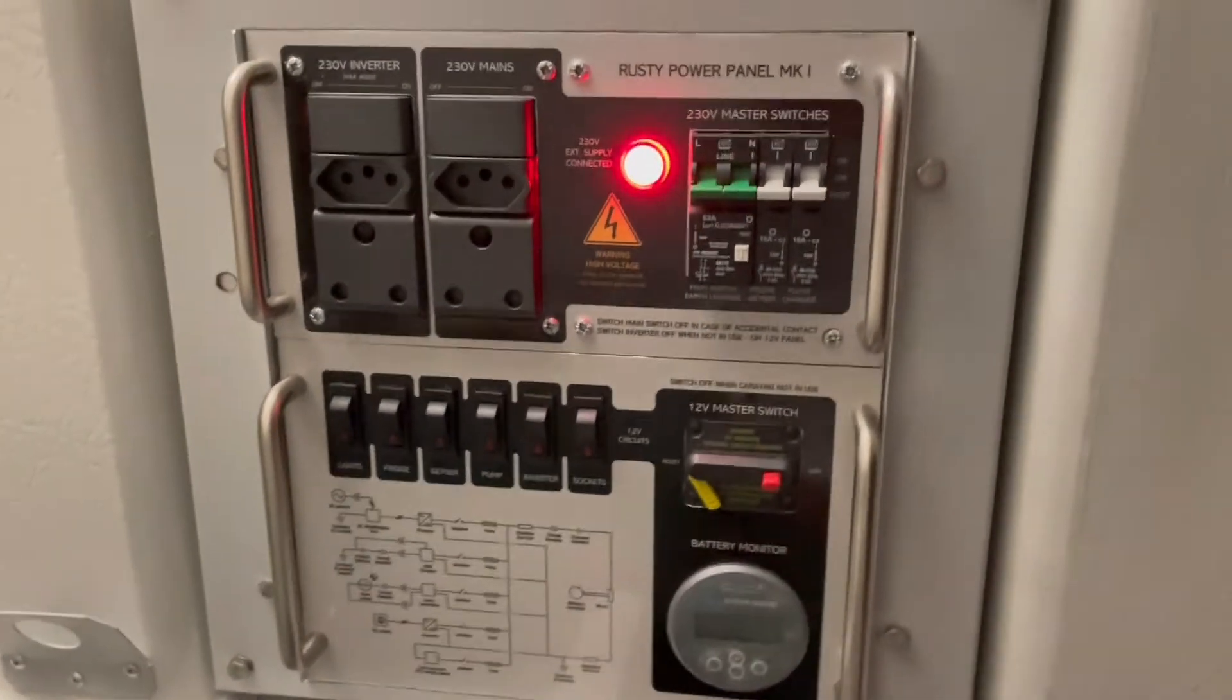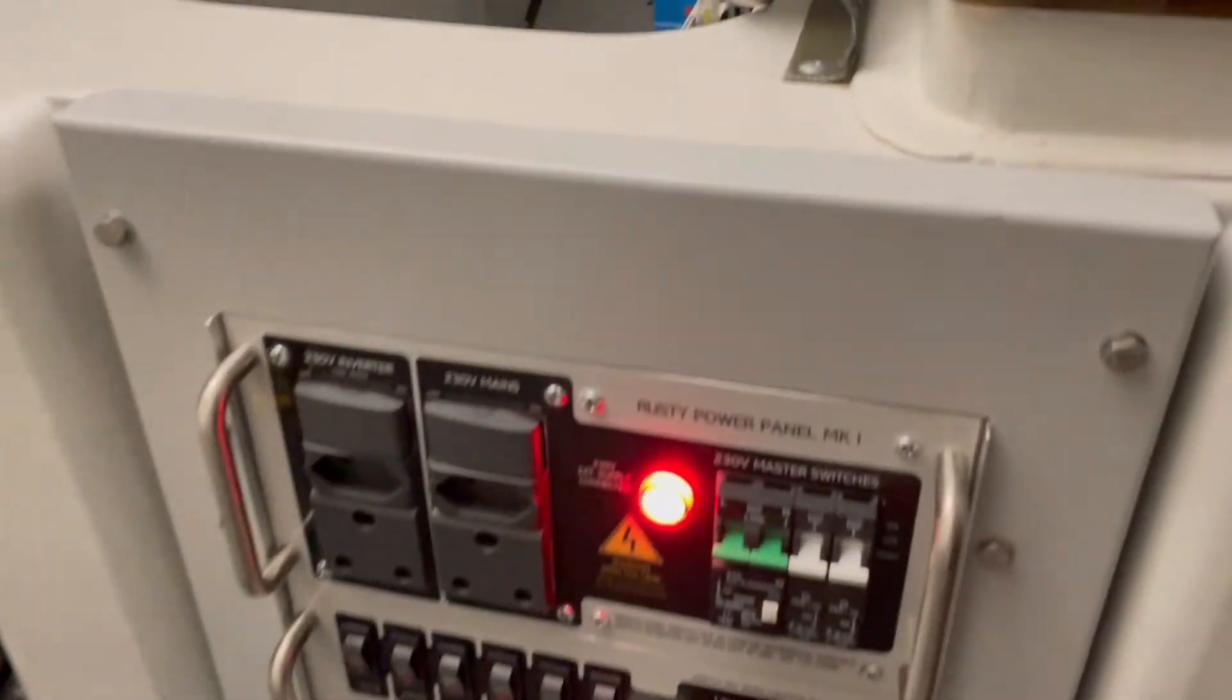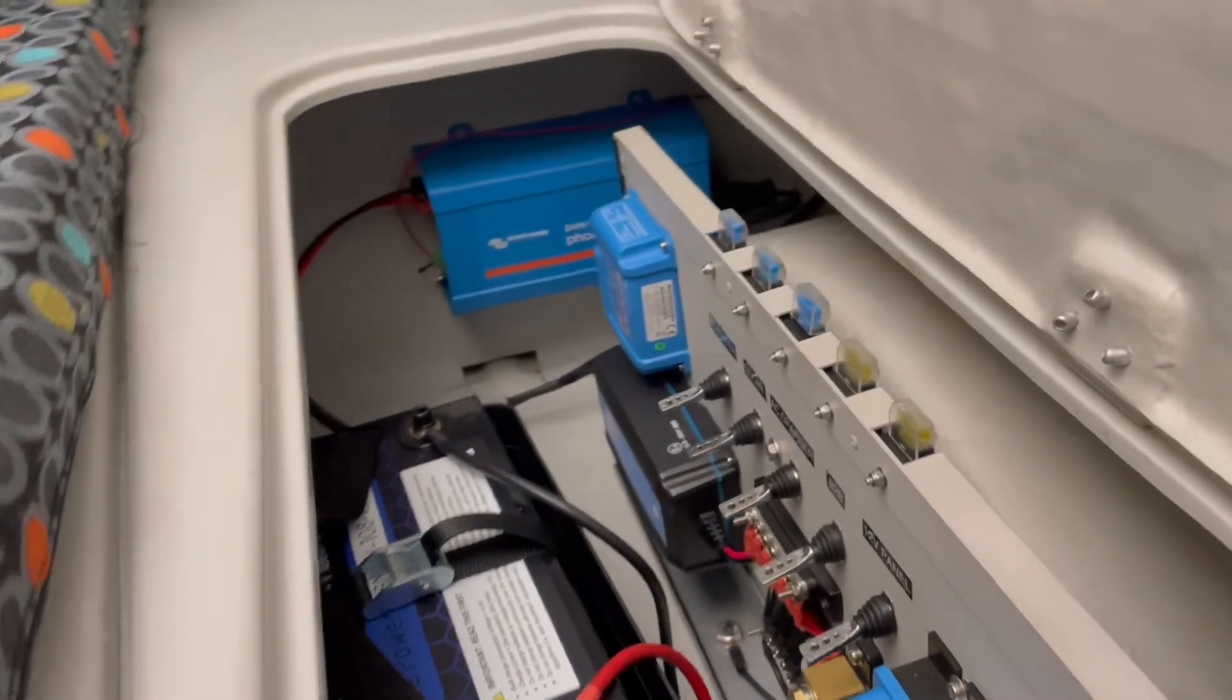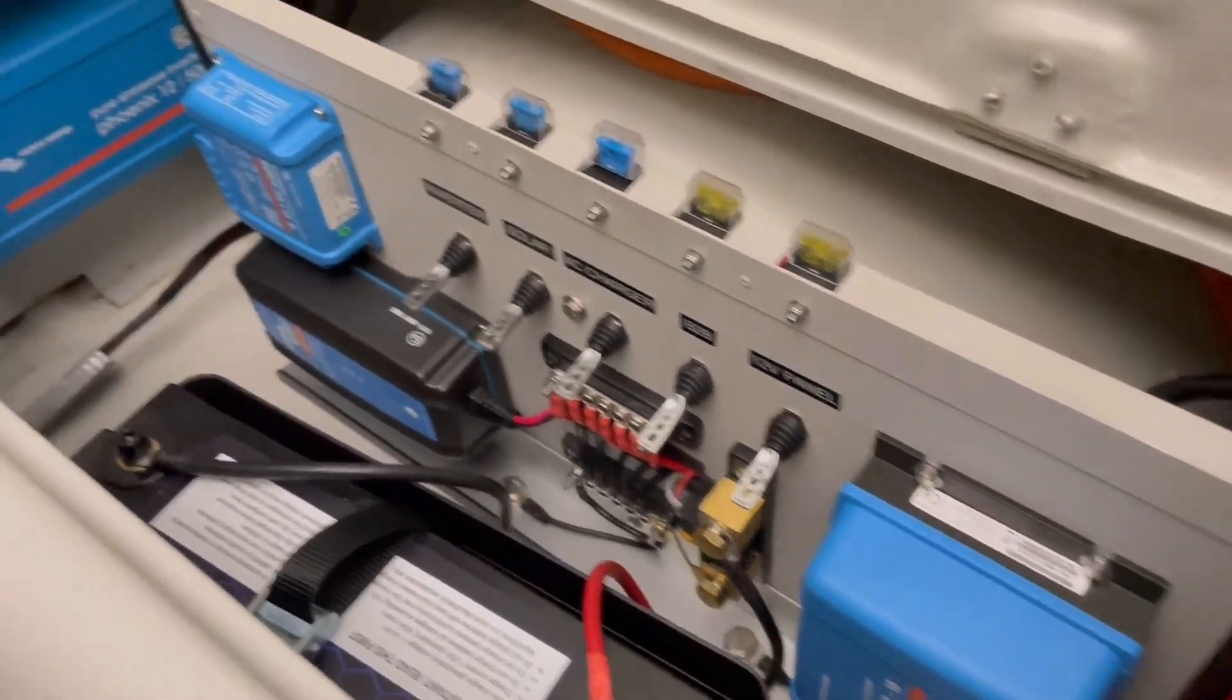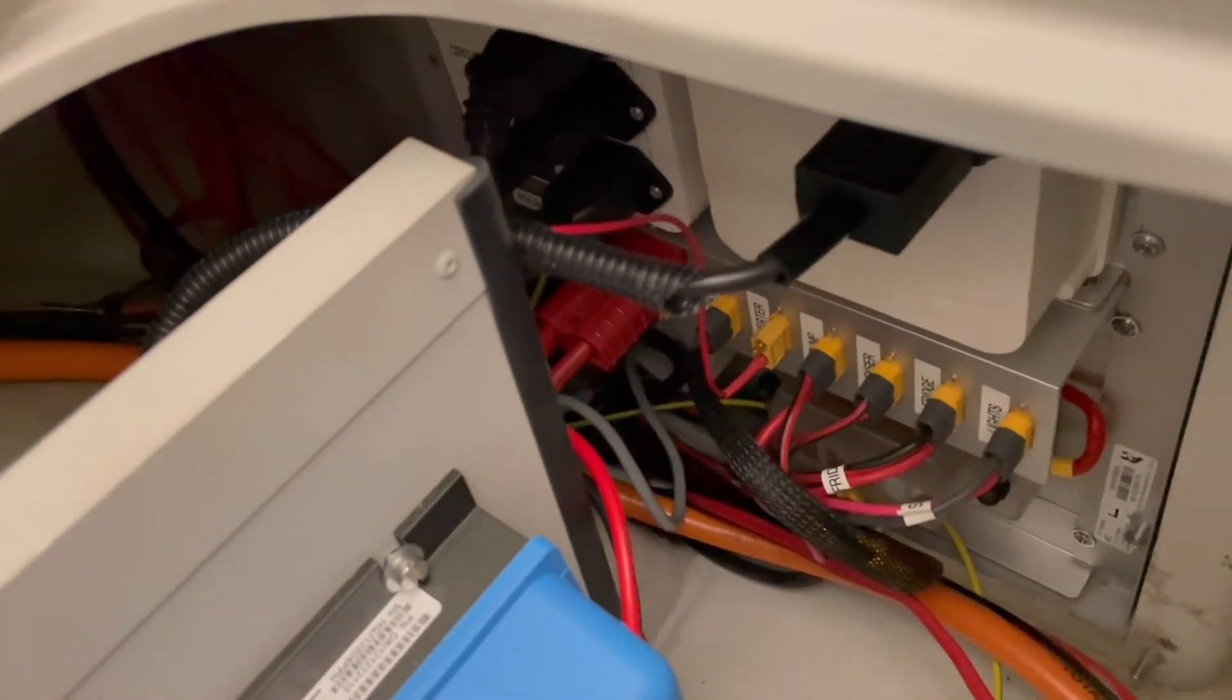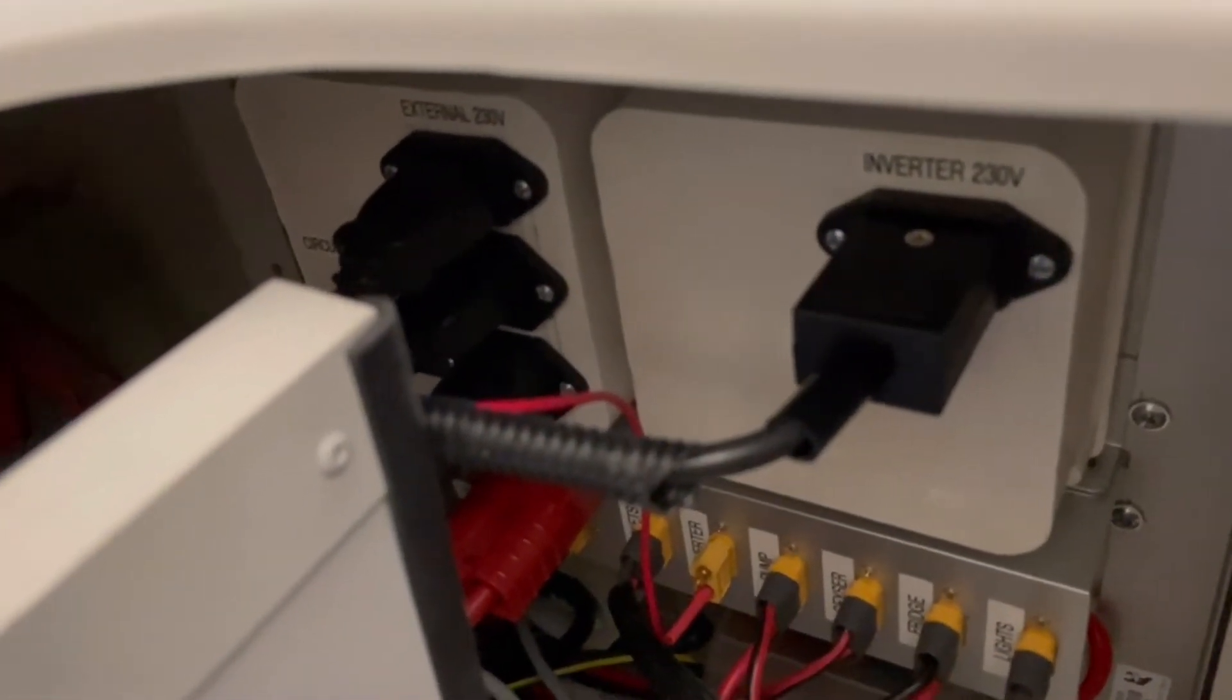The power panel is installed and connected to external power, but I haven't switched it on yet. The warning light tells you that you've got external power connected. On the inside we've got the lithium battery and the Victron panel all connected up. We've got the inverter connected and all the connections onto the back of the 12 volt panel, and the 220 volts plugged in feeding the fridge, charger, plugs and geyser.